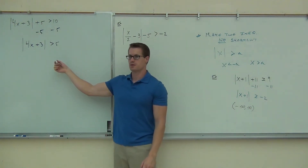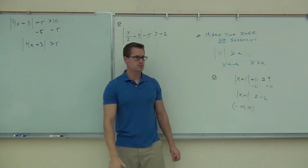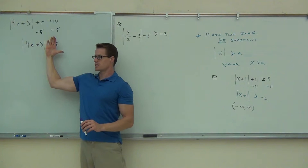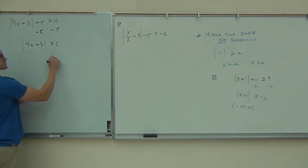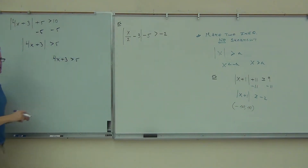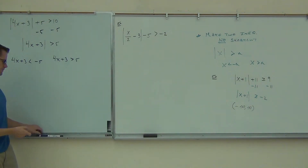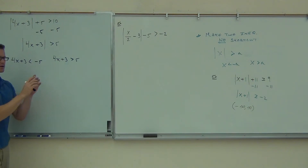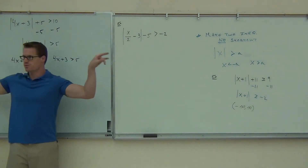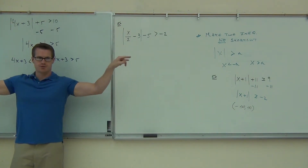Is my shortcut going to work here? Y'all need to know that — is it going to work or not? No. It works if it's this way; it does not work if it's this way. The first inequality we're going to write is 4x plus 3 greater than 5, without changing anything. Tell me my second inequality. Is it going to be greater than or less than? Less than — we have to switch that around. You change the sign, you flip the inequality. On this type of 'or' inequality, look at your symbols — they will be facing different ways, not the same way.